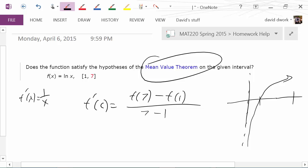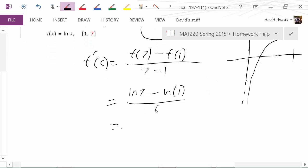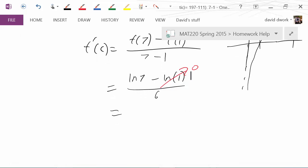So therefore, we know that there is a c somewhere in here such that there is a derivative such that it will equal this slope. So we've got to figure out what that slope is. So therefore, when I substitute in seven, I get natural log of seven minus natural log of one all over six. So therefore, what's the natural log of one? Well, that's zero. So therefore, I end up with the natural log of seven over six.